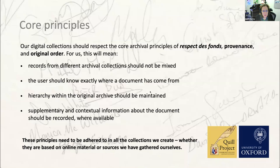Suppose the same Rivendell archive has both Elrond's papers and Legolas' papers. This will still be one resource collection in Quill because they've come from the same archive, but you will need two separate boxes to separate their papers. Think of the resource collection as the building where archives are housed. Once inside, there are separate rooms for Elrond and Legolas, with cupboards, files and documents inside — however many levels you need.